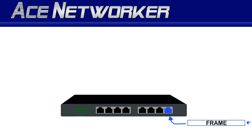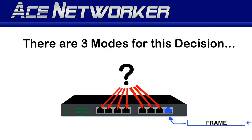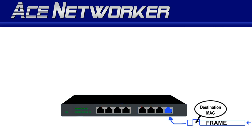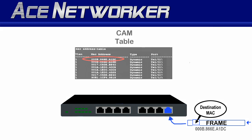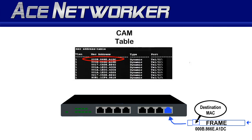All network switches read the incoming frames they receive to make a filtering decision on the destination of where to send that frame or data. In other words, which interface do I send it out of on the switch after it comes in on another interface? All switches read the MAC addresses in the frames they receive to make that filtering decision.